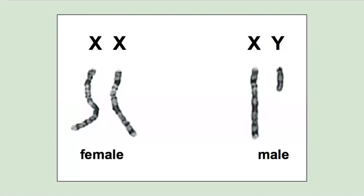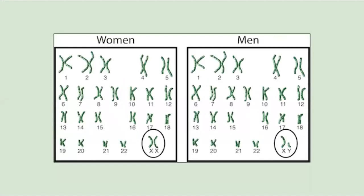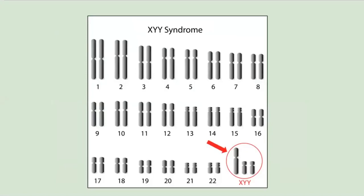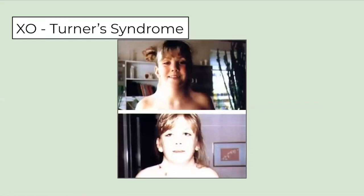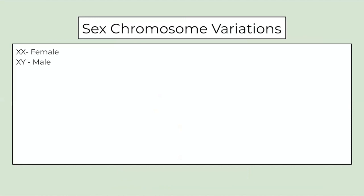A lot of people are familiar with XX and XY chromosomes for female and male — this refers to the 23rd pair of chromosomes in someone's DNA sequence. But not everyone is born XX or XY. Sometimes there's a chromosome missing, sometimes there are extra chromosomes. Because these are the sex chromosomes, it affects our bodies in different ways during development. Some variations give men breasts and less body hair; some make women infertile. There are actually 11 chromosomal sex variations that have been identified.